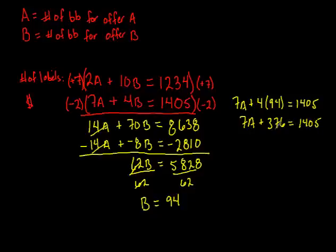Subtract 376 from both sides. That gives you 7A is equal to 1,029. Trust me on that. I think it's right. Divide both sides by 7. And A is equal to 147.